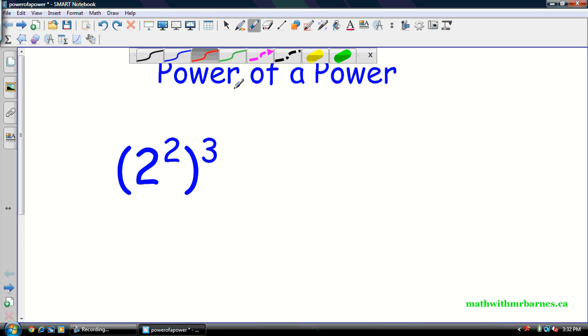So this is a power of a power, and basically what we have here is a power with another exponent on it. So let's write this out as repeated multiplication. We'll keep 2 to the 2, even though we know it's 4. So we'll go 2 to the 2 times 2 to the 2 times 2 to the 2. So we have 2 to the 2 multiplied by itself 3 times because of our exponent 3.